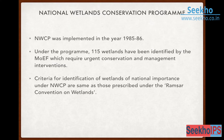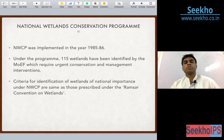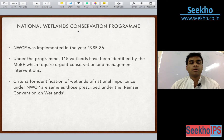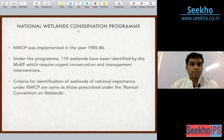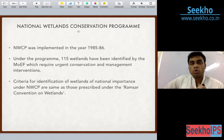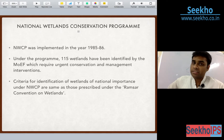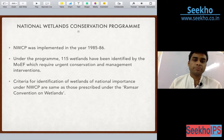Coming to the National Wetland Conservation Programme, it was implemented in 1985-86. Under this program, 115 wetlands have been identified which need urgent conservation. The criteria for identification is similar to that followed under the Ramsar Convention. In Punjab, we will be discussing two sites of national importance covered under this program, and three sites covered under the Ramsar Convention.